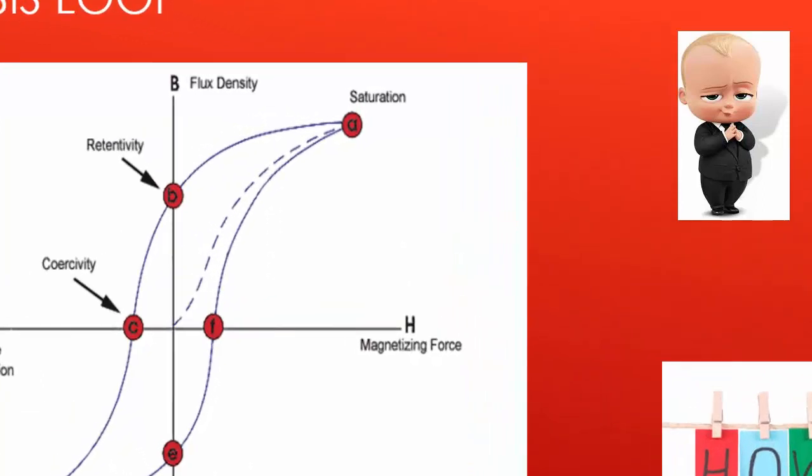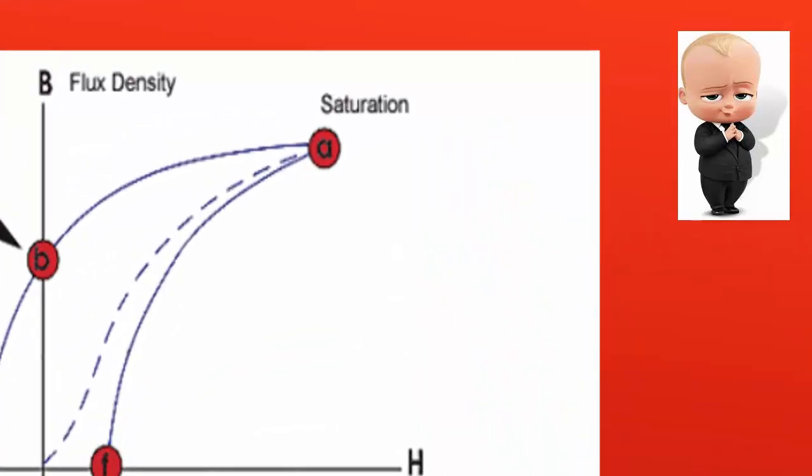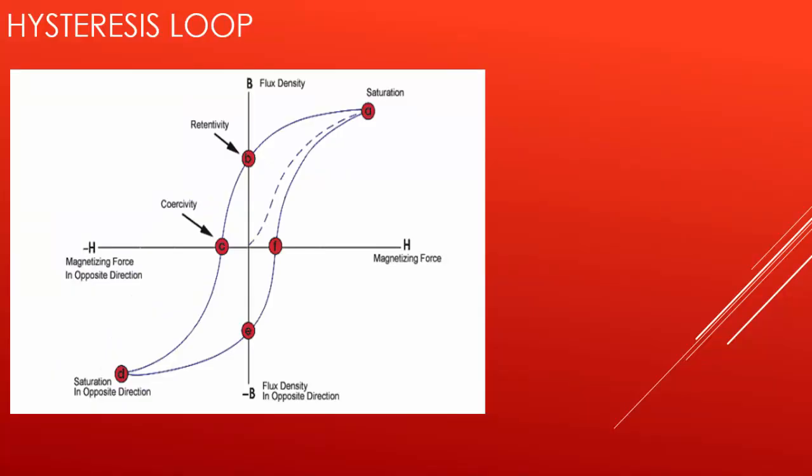So point A, a ferromagnetic material that has never been previously magnetized or has been truly demagnetized will follow the dashed line as H is increased. So we can say that the more the current is applied, the stronger the magnetic field is. At point A, almost all magnetic domains are aligned, or we can say that magnetic saturation point is achieved.